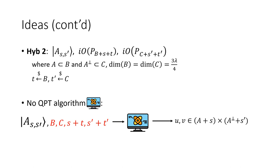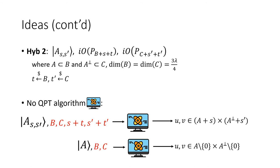We argue that this approach does not work for subspace states. For subspace states, the quantum algorithm is given the subspace state A and two descriptions B and C, which are a superspace of A and a superspace of A-perp. Given B and C, it is easy to find vectors in A × A-perp, because any vector in C-perp is a vector in A and any vector in B-perp is a vector in A-perp. Therefore such an argument does not work for subspace states.